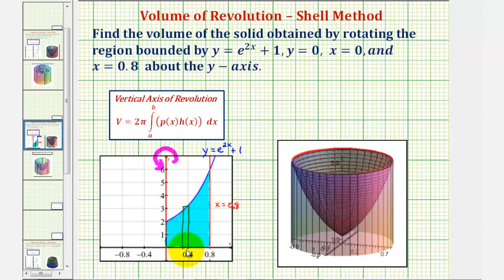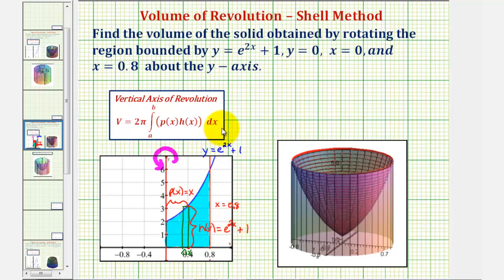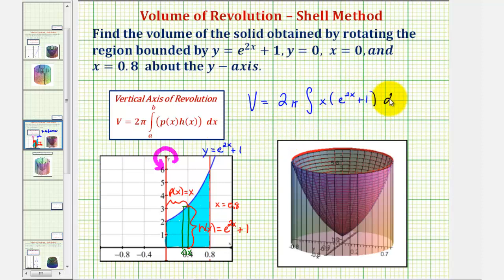Looking at this rectangle again, notice how the width of the rectangle would be delta x — this is why we integrate with respect to x. This length here would be p of x, and notice how p of x would just be x, the distance along the x-axis. Then h of x, the height, would be the function value given by y equals e to the power of two x plus one, so h of x equals e to the two x plus one. We'd be integrating from zero to 0.8. Therefore the volume is equal to two pi times the integral of x times the quantity e to the two x plus one, integrated with respect to x from zero to 0.8.